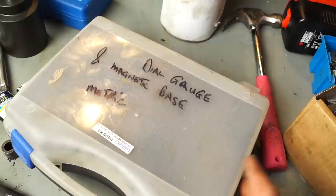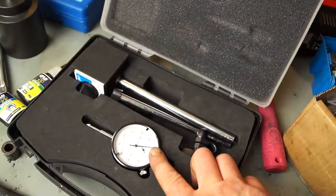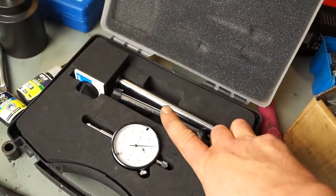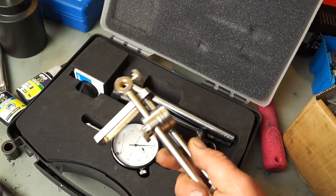So first of all I'm going to show you that we have a dial gauge with a magnetic base which you can buy for about £35. This is quite handy - you have the base and the gauge itself.